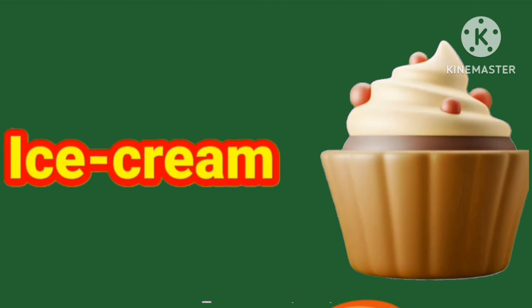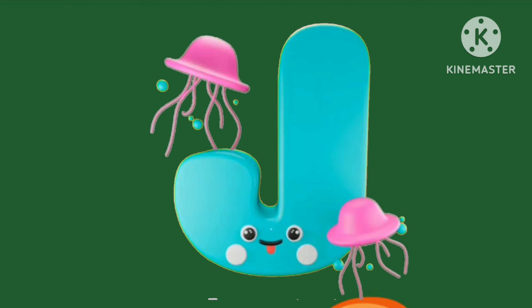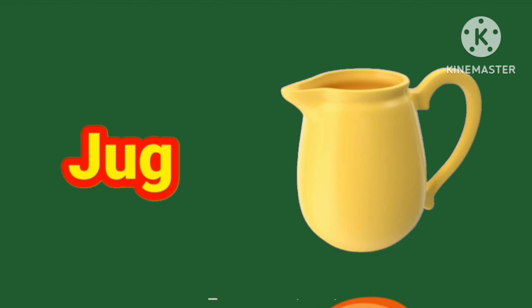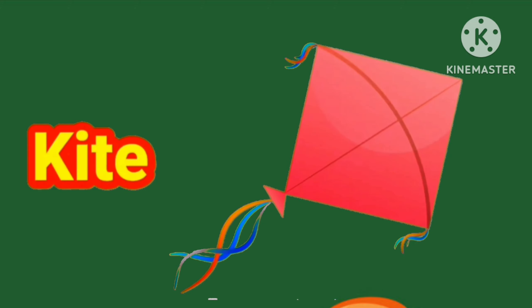I is for Ice Cream, I C E C R E A M, Ice Cream. J is for Jug, J U G, Jug. K is for Kite, K I T E, Kite.